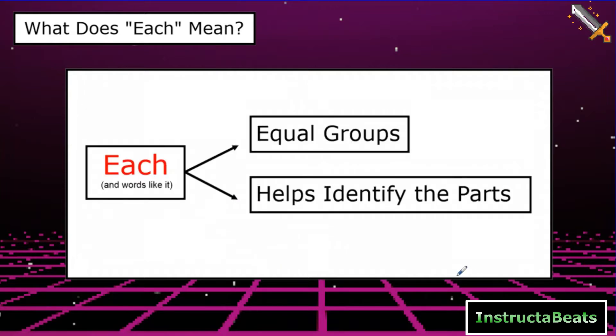Here's our roadmap to victory. What does each mean? It tells us when you see it that you're going to have equal groups and it's also going to help you identify the parts. So when you see the word each or other words like it, you know hey, I have equal groups and you know what the parts are of your part-whole model. And that's so important to help us. So let's play this word problem game together, but this time with no numbers.